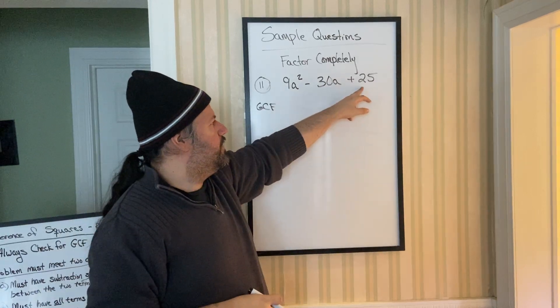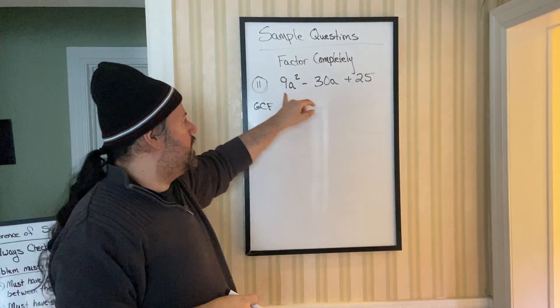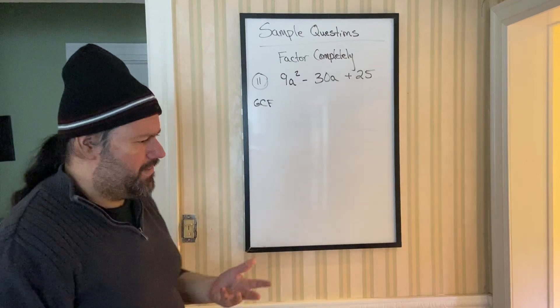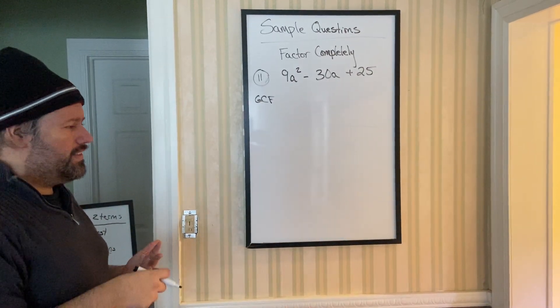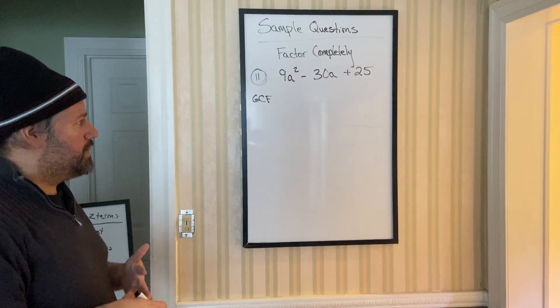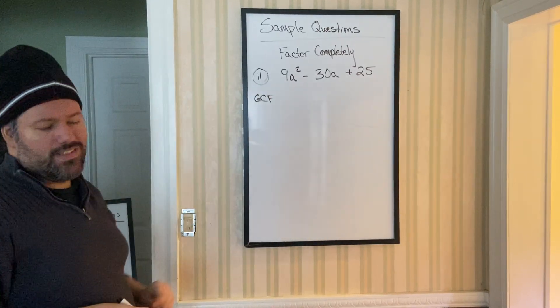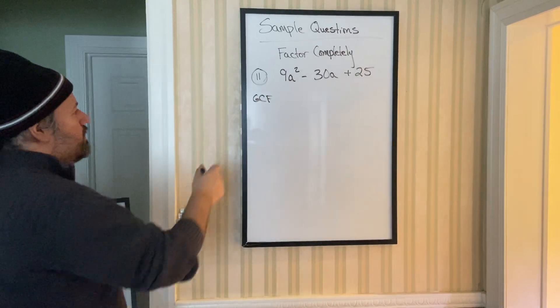Number wise if you break down 9 it's 3 and 3. If you break down 25, 5 and 5. So these don't have any numbers in common. So we don't have a GCF for parentheses, letters, numbers and it doesn't start with a negative. So there is no GCF.